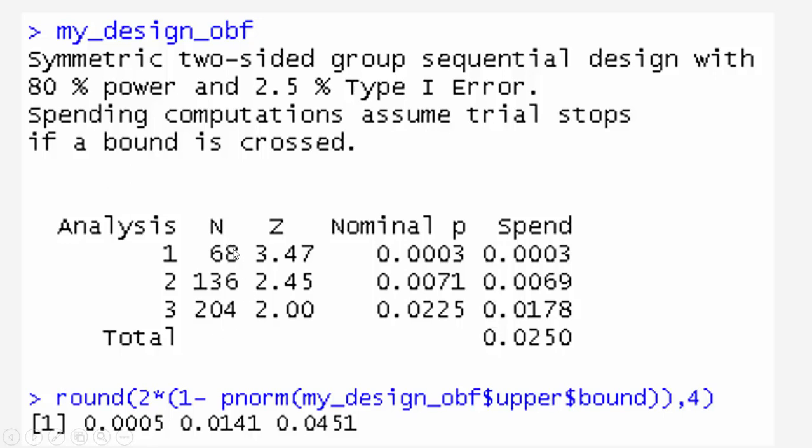The sample size here increased significantly in case of POCOCK, but not with O'Brien-Fleming. That's all for this video. Thank you.